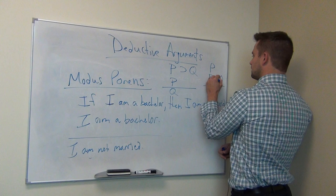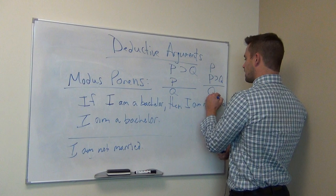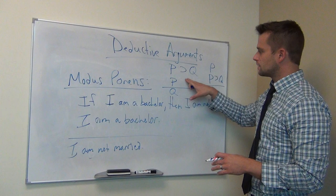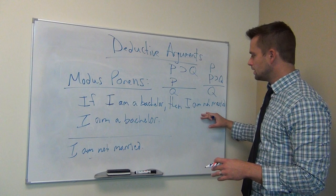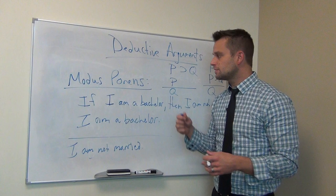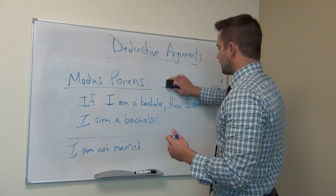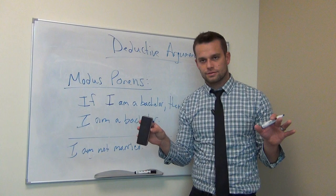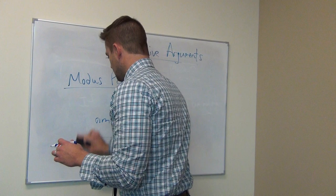You can see this structure: P could come first — the order doesn't matter, kind of like in addition where 2 plus 3 is the same as 3 plus 2. So: if P then Q, P, therefore Q. Written in language: 'If I am a bachelor, then I am not married. I am a bachelor, therefore I am not married.' This is a valid form. But we still haven't really talked about what validity means, so let's define it.